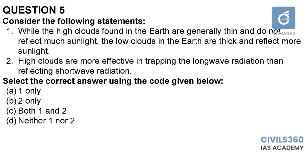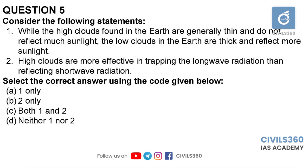Fifth question: consider the following statements. Statement one — high clouds found on Earth are generally thin and do not reflect much sunlight, while low clouds are thick and reflect more sunlight. Statement two — high clouds are more effective in trapping long wave radiation than reflecting short wave radiation. All clouds have a certain albedo. However, high clouds are thinner and low clouds are thicker, as rain-bearing clouds are low clouds and non-rain-bearing clouds are high clouds.